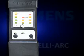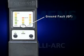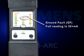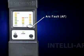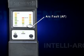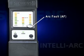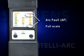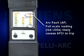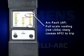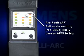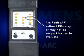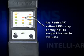Ground fault is marked as GF. The full-scale reading for this LED indicates 50 or more milliamps. Arc fault is marked as AF. This LED indication does not display in reference to current level, but rather in severity of events, with a full-scale reading — red LEDs — representing an event that is very likely to cause an AFCI device to trip. Partial readings, yellow LEDs, may or may not be suspect issues to evaluate.